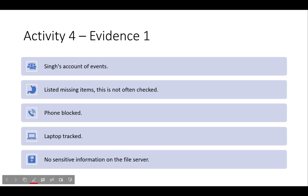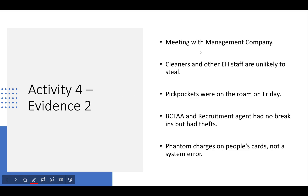The missing items were not often checked — they only found out that some keyboards and mice were gone because a phone and laptop were missing. The phone was blocked by calling the phone company, and the laptop was tracked and found in Nairobi, Kenya on 9th April. There was reportedly no sensitive information on the laptop at the time as they were only working on fire extinguisher documentation, but there could be other sensitive data on it.